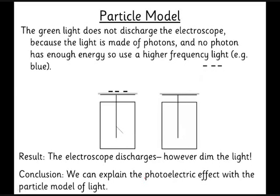So even a very dim blue light might knock those electrons off. And these are the particles that we call photons now. So he said that light is made of photons and that the energy of these photons depends on the frequency.